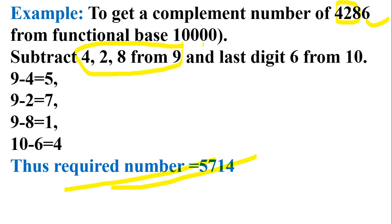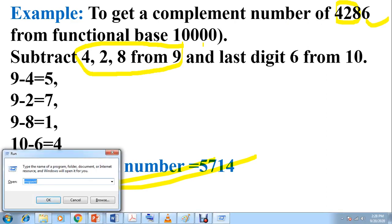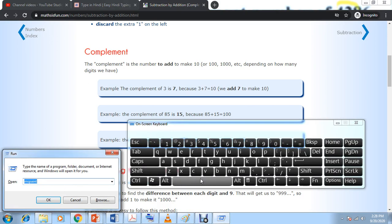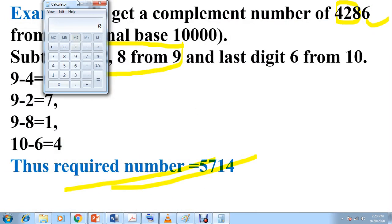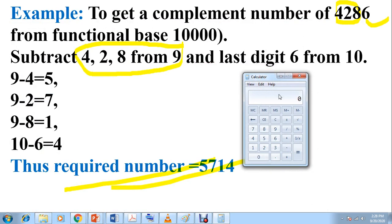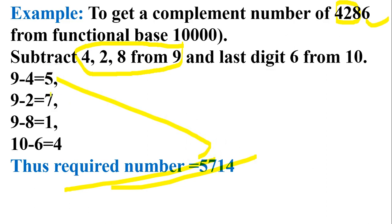You should remember your base is 10,000. Let me verify this with a calculator. You need to add 4, 2, 8, 6 plus what we got: 5, 7, 1, 4 — it should come to 10,000. Yes, it is coming to 10,000. So this is how you can find the complement number using this formula — you subtracted all 3 digits from 9 and the last one from 10, and you got 5, 7, 1, 4.